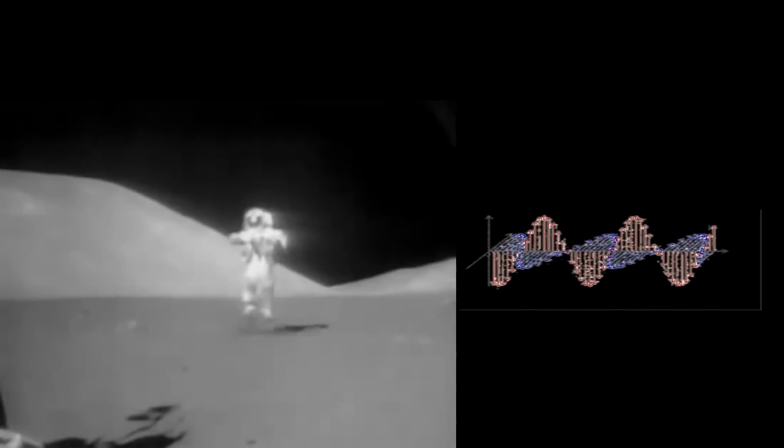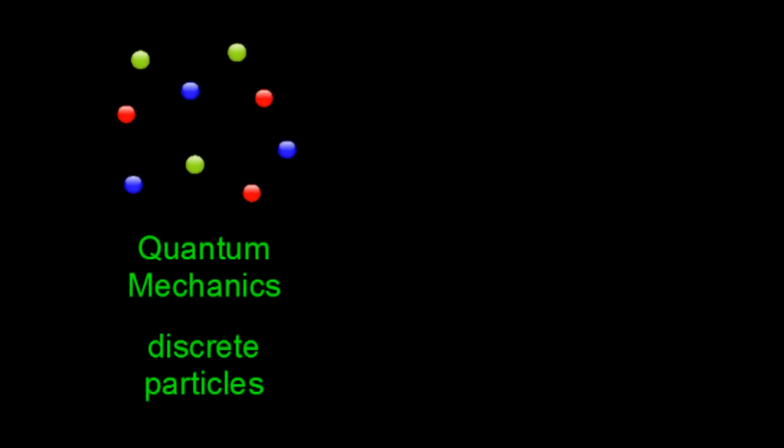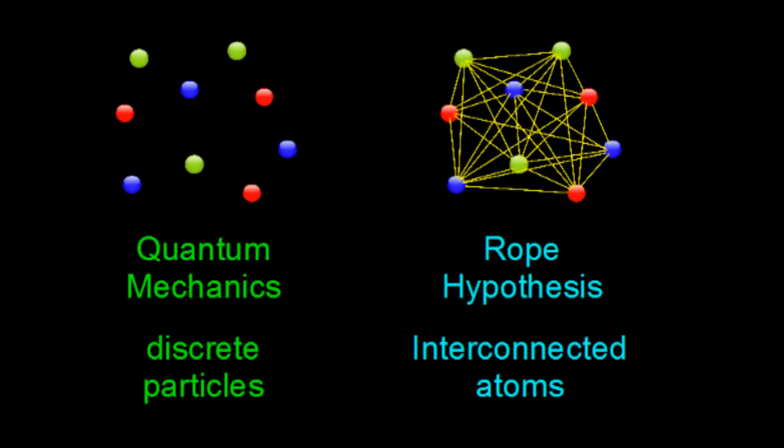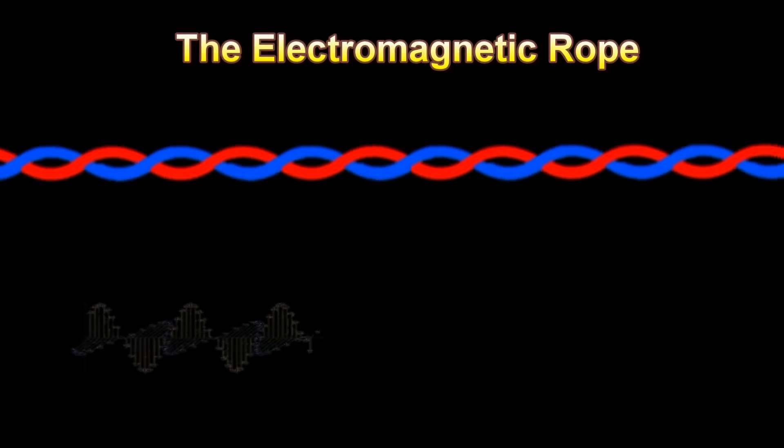According to mathematical physics, all particles in the universe are independent, discrete entities. The rope hypothesis proposes instead that all atoms are interconnected by a rope-like mediator. It is the twine threads that comprise the electromagnetic rope that produce light and gravity.